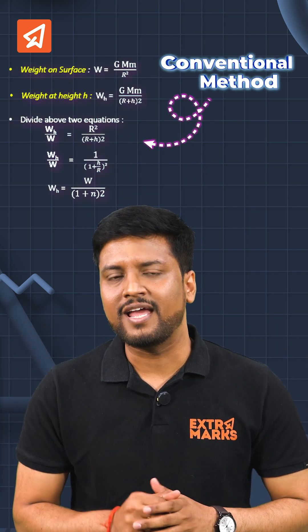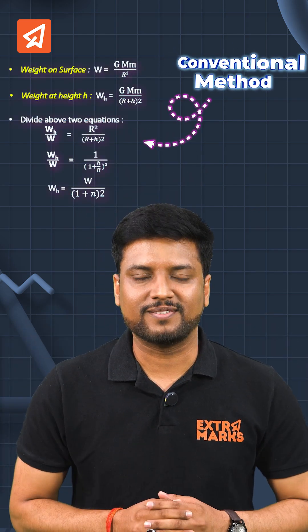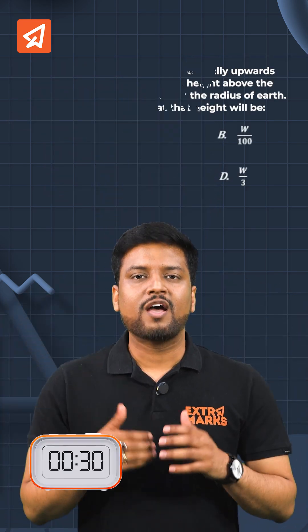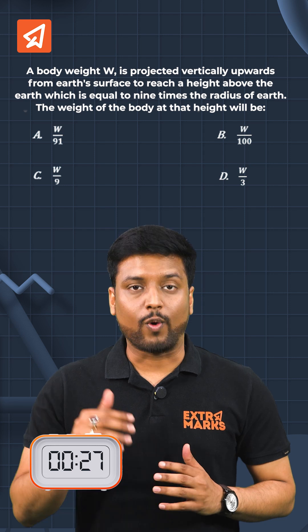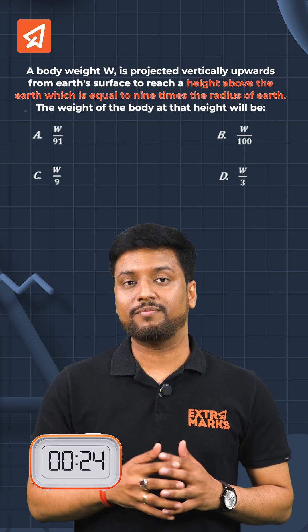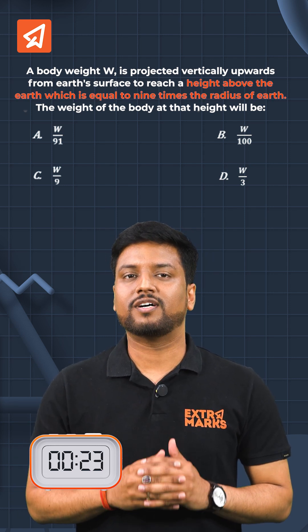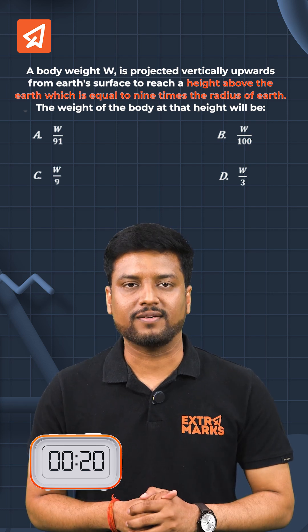JEE 2024 had a similar question. If you solve this by the conventional method, it will take more than 2 minutes. But with our master trick, let's try together. The question says: a body of weight w is projected vertically upward to reach a height equal to 9 times the radius of the earth. The weight of the body at that height will be?